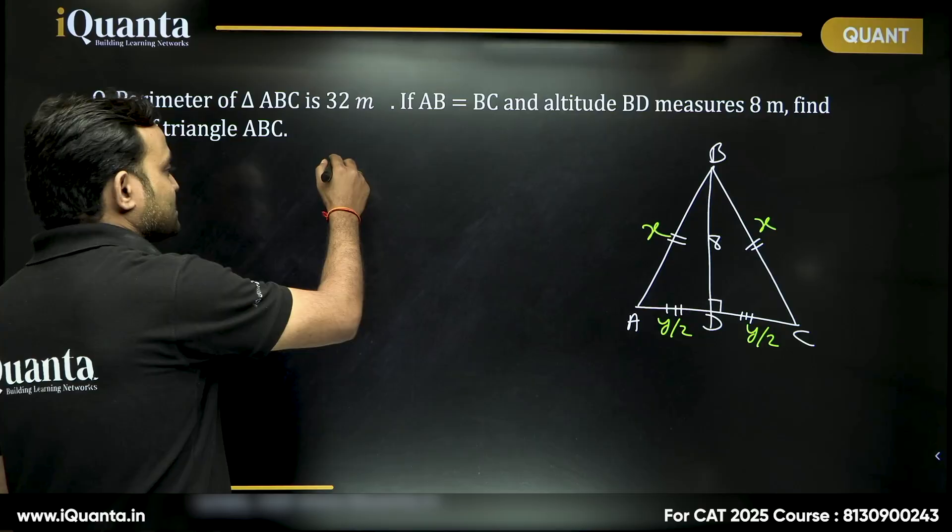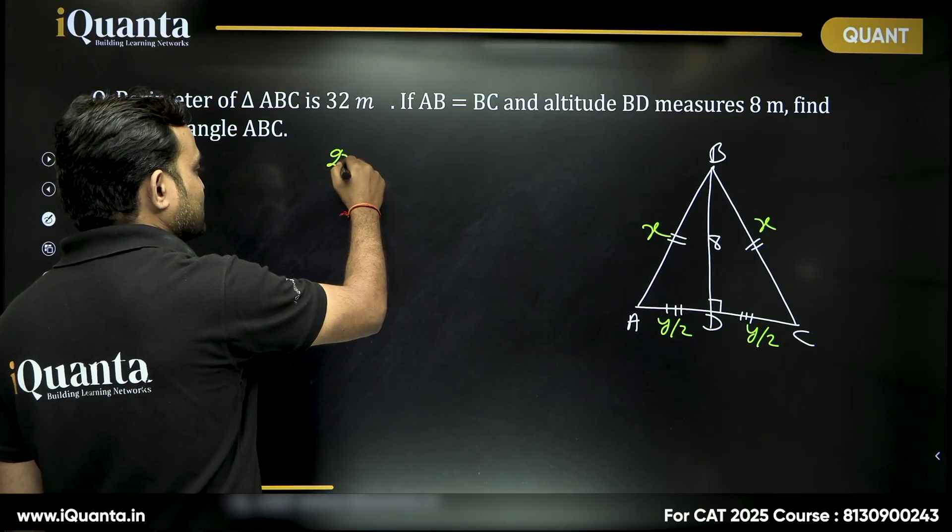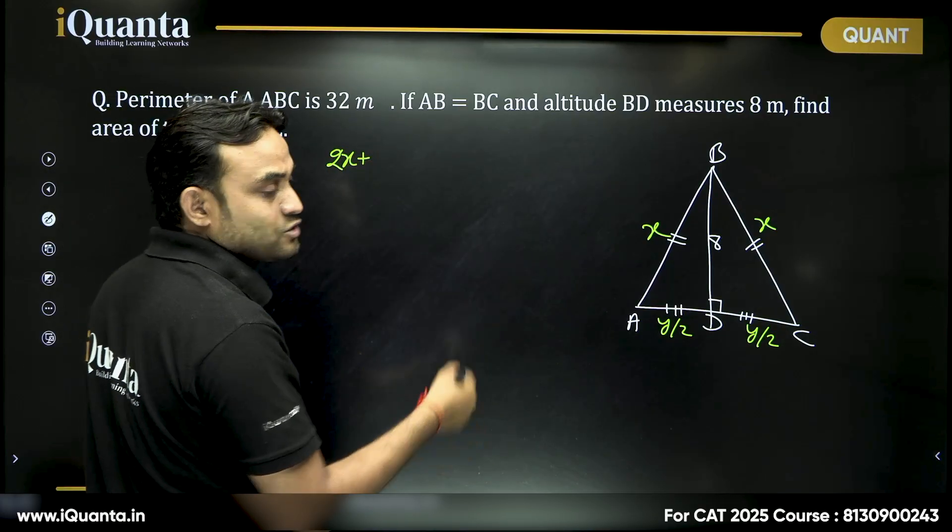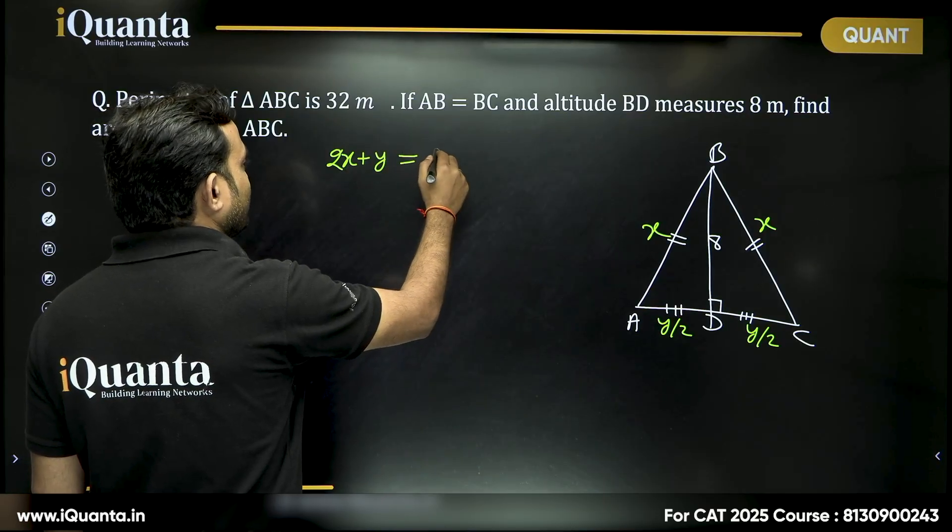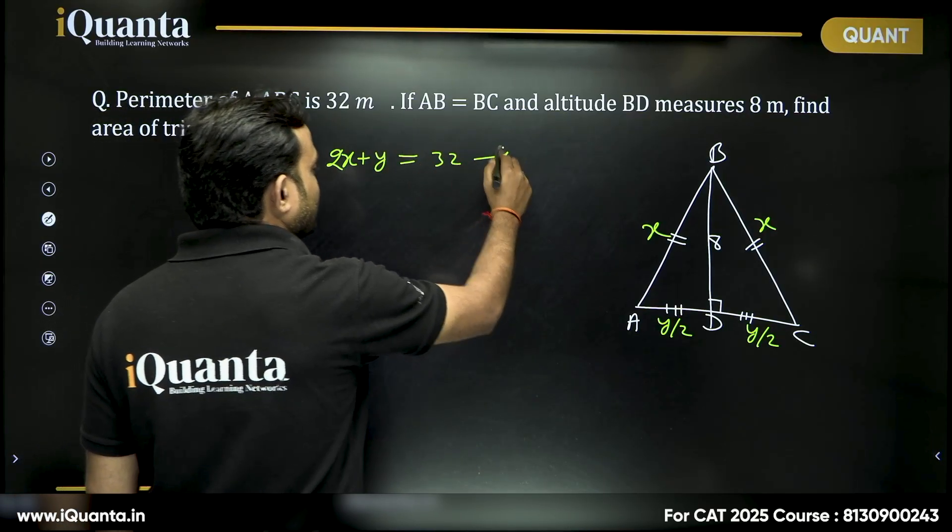From there, what do we get? Sum of all the sides, which is X plus X plus Y by 2 plus Y by 2, 2X plus Y will be equal to the perimeter which is 32.